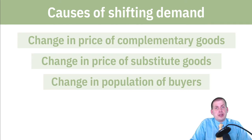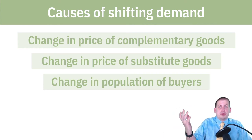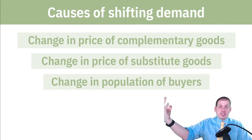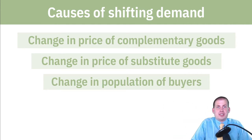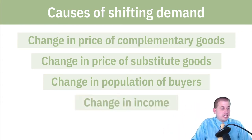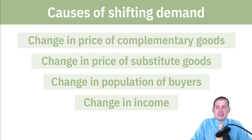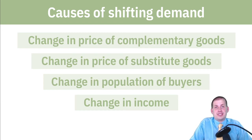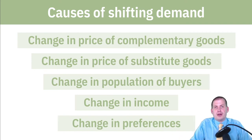A change in the population of buyers is another cause — buyers might get older or have different preferences. This is the idea of millennials killing Applebee's: there's been a change in the population of buyers and change in preferences, so that's a whole new demand curve. Change in income works the same way — millennials are not buying houses as much because they're poorer than their parents' generation, having gone through two recessions. Because of that there's a whole new demand for houses, or just a change in preferences creates a brand new demand curve.